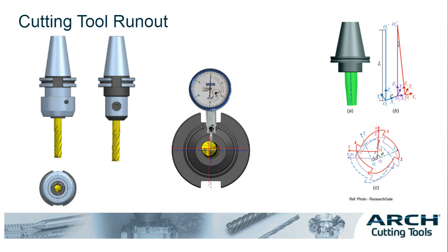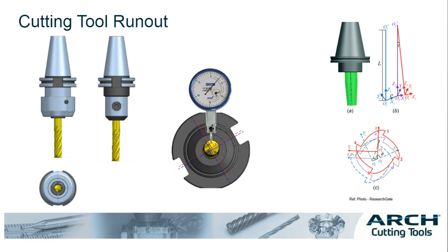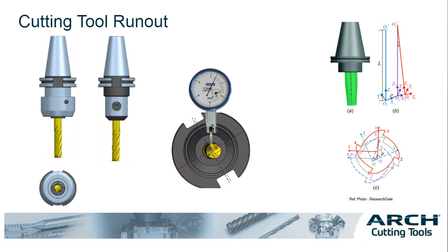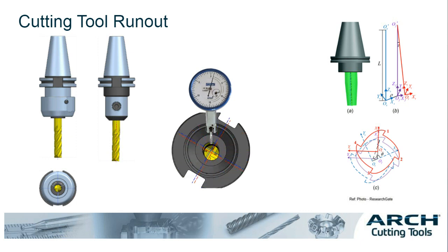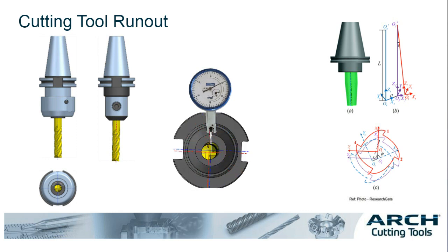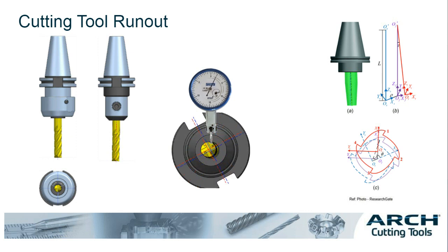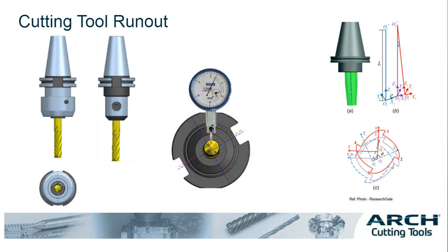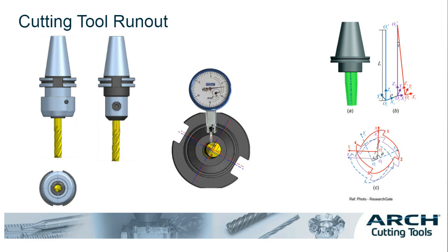One of the biggest indicators of a worn or failing tool holder is tool runout — when the cutting tool is not rotating as close to the center axis as it should, creating a very unstable cutting condition. And don't forget: the longer our gauge length is, or the longer the overall tool length becomes, the more exaggerated this tool runout also becomes.